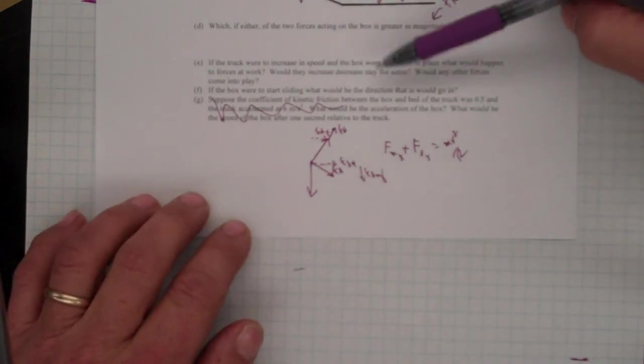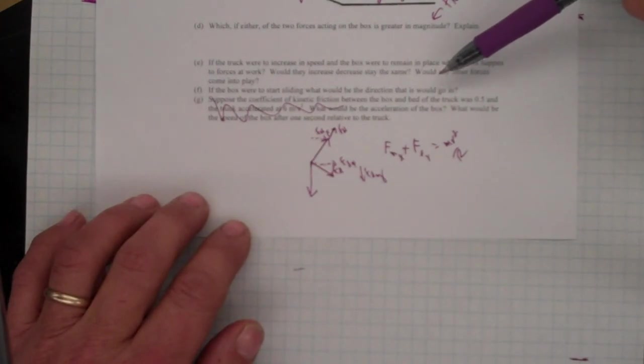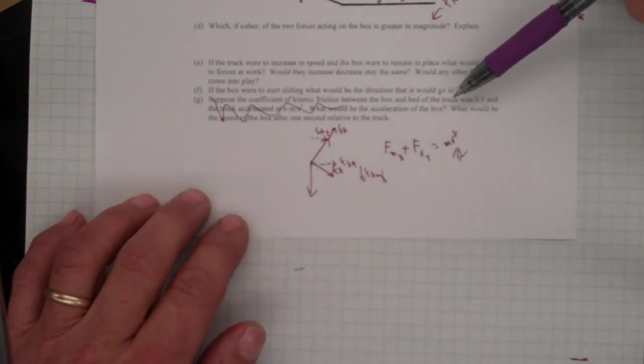If the box were to start sliding, what would be the direction that it would go in? Again, the idea here is that the only force available would say that the box would go in the direction that it wanted to if there were no friction.